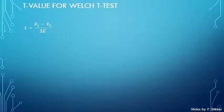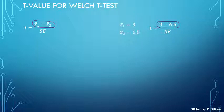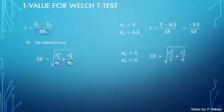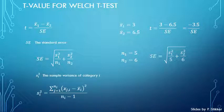Getting back to our t-value formula, we now have X-bar 1 and X-bar 2 as 3 and 6.5. Filling those into the formula, 3 minus 6.5 gives minus 3.5. That leaves the SE in the denominator — SE is short for standard error. The formula for SE contains N1 and N2 (which were 5 and 6) and S-squared, the sample variance for each category, which has its own formula we need to calculate next.